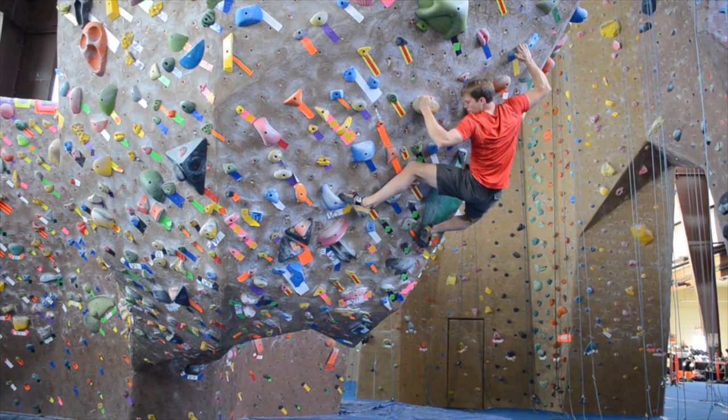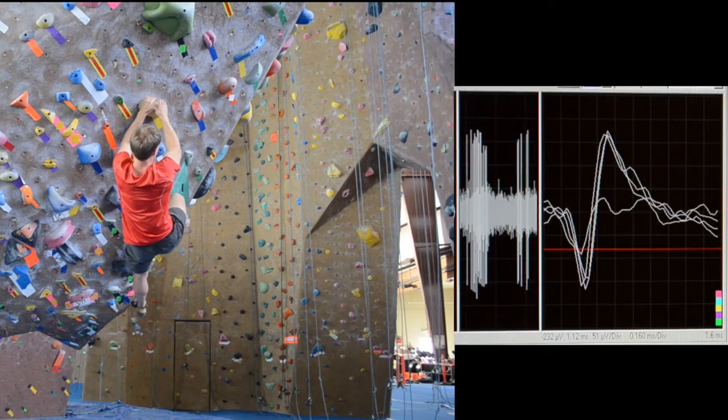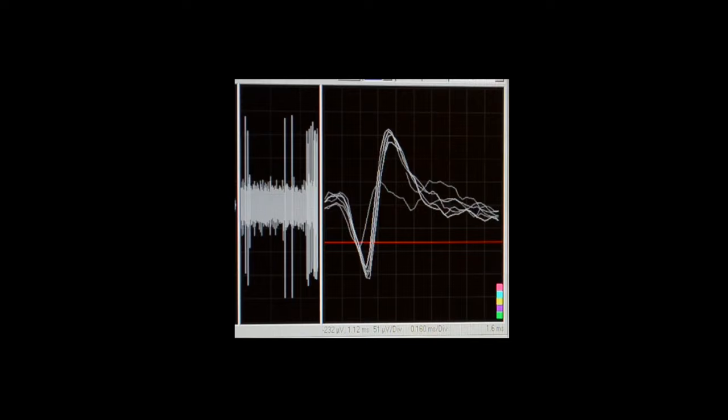Imagine for example, a climber reaching for a handhold. As the climber makes a reach, his motor cortex must coordinate the different muscles in his arm and hand. If we record from a single neuron, we can see the neuron change its firing rate as the muscles activate.